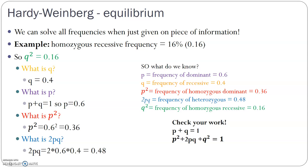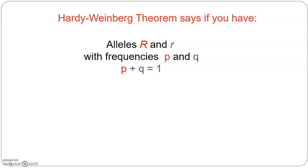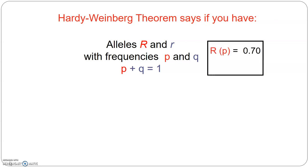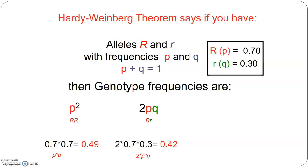Here's another example from Dr. O'Grady: if P = 0.7, then Q = 0.3, since P + Q = 1. From there, P² = 0.7² = 0.49 or 49%, 2PQ = 2 × 0.7 × 0.3 = 0.42 or 42%, and Q² = 0.3² = 0.09 or 9%. Add these genotype frequencies together and they equal 1.